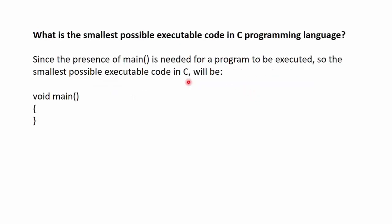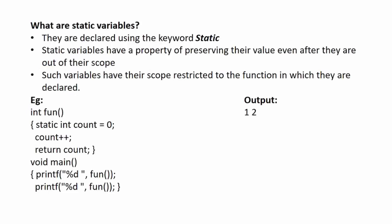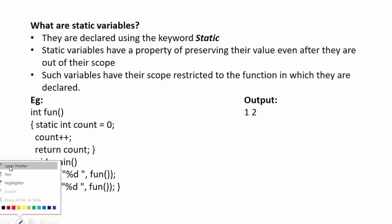Next question: what is the smallest possible executable code in a C programming language? Since the presence of a main function is needed for a program to start its execution, for the smallest possible executable code in C it is mandatory to include a main function. So the code will be: void main(){} — it will only contain a main function with parentheses but no arguments and no body. This code will be compiled and executed, but it will not do anything.